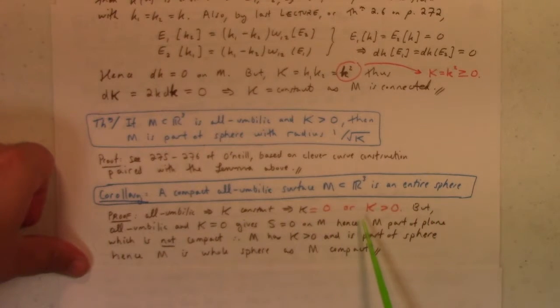So either k is equal to zero or the constant is positive. If it was all umbilic and the Gaussian curvature was zero, that it pretty obviously shows you, I mean, you can, I invite you to prove this. It's not hard. Just think about it for a little bit. You'll get it. The shape operator has to be zero on M, if you have this. But if the shape operator is zero on M, then M is part of a plane. But parts of planes are not compact.